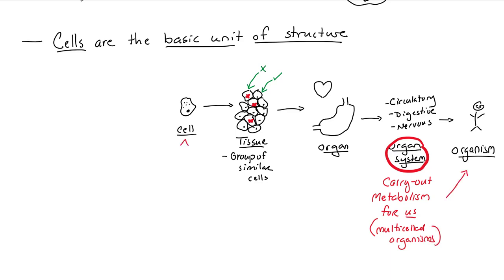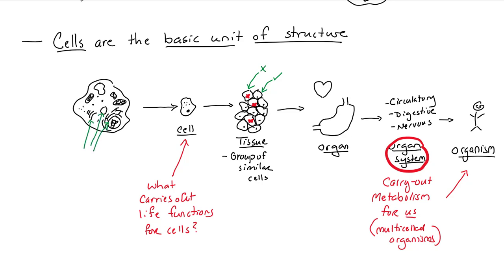But what about a little cell? What carries out life functions for cells? For that, we have to look at things that are smaller than cells. We'll have to go inside a cell and look at these parts being drawn right now. These are known as cell organelles. They carry out life functions for cells. So organ systems carry out life functions for big organisms like us. Organelles carry out life functions or metabolism for individual cells.